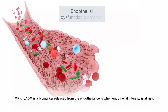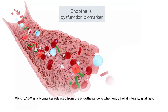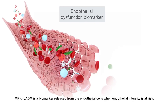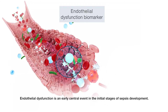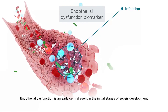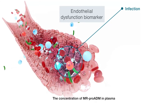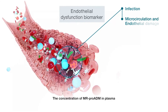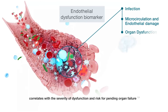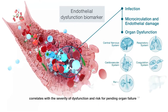MR-PROADM is a biomarker released from the endothelial cells when endothelial integrity is at risk. Endothelial dysfunction is an early central event in the initial stages of sepsis development. The concentration of MR-PROADM in plasma correlates with the severity of dysfunction and risk for pending organ failure.